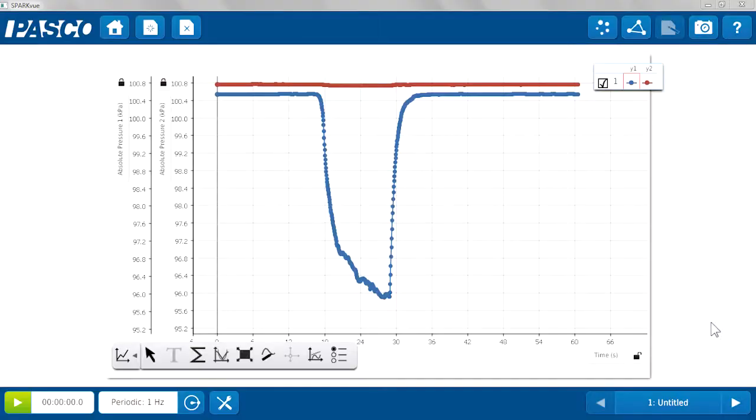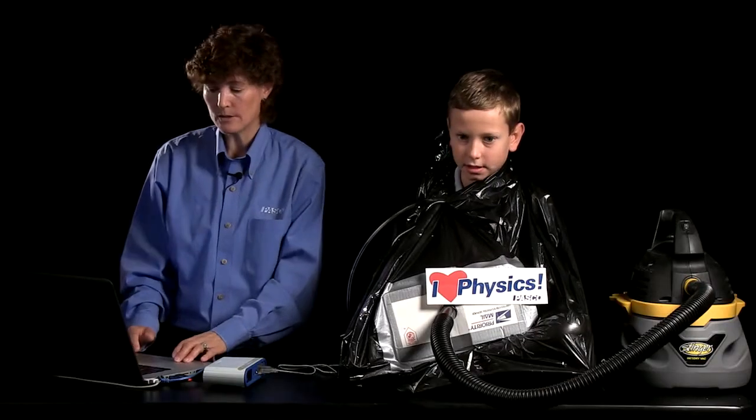We have two plots here, a red one and a blue one. And the red plot's showing the pressure outside the bag throughout the duration of the experiment. The blue plot is showing the pressure inside the bag, and we can see from the blue plot that there was a fairly clear drop in pressure during the shrink wrapping. The difference in pressure is about 5 kilopascals, about 5,000 pascals. So what's going on here?